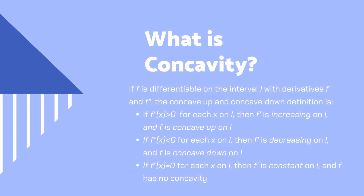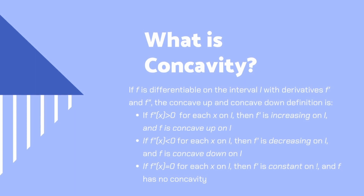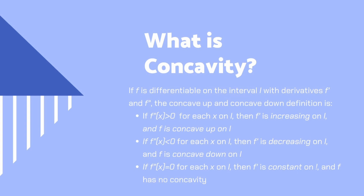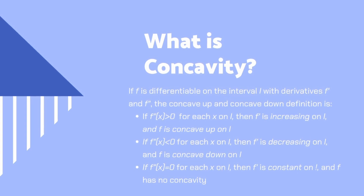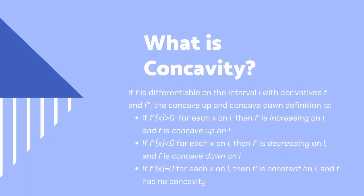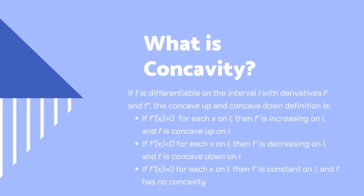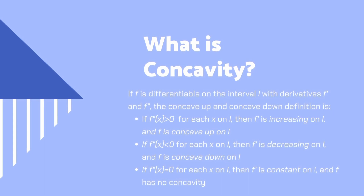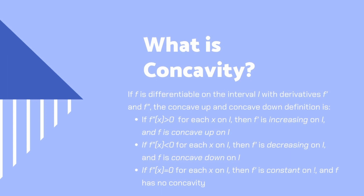We can apply a very similar way of thinking to second derivatives. Like first derivatives, second derivatives also tell us useful information about the behavior of a function. You can find the second derivative, usually denoted by f double-prime, by taking the derivative of the first derivative. The first derivative can tell us where the function is increasing or decreasing, while the second derivative can tell us the shape of the graph — specifically, the concavity, whether the graph is concave up or concave downward.